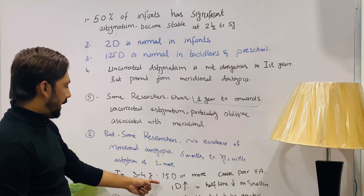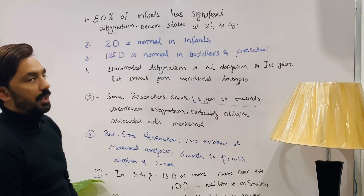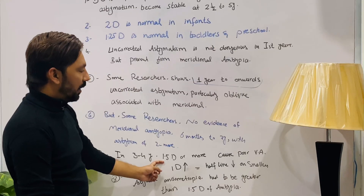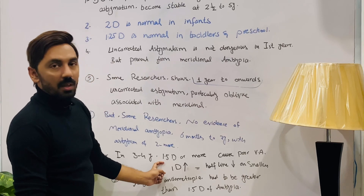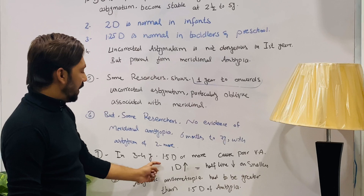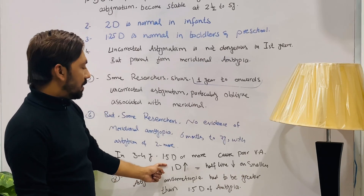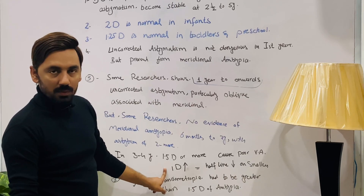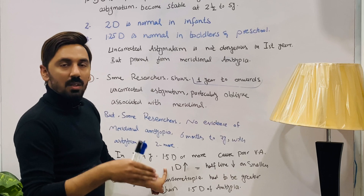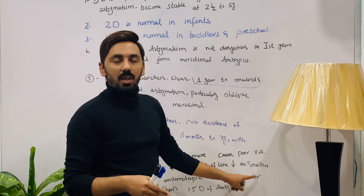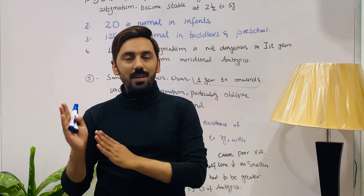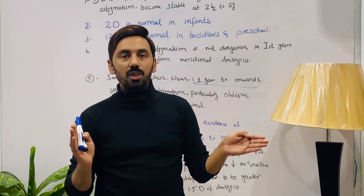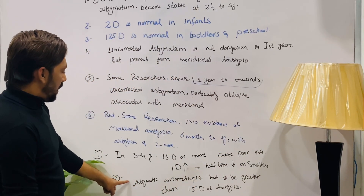In the three to four year age group, 1.5 diopters or more of uncorrected astigmatism can cause poor visual acuity. This is because every one diopter increase in astigmatism causes a half-line decrease on the Snellen chart.